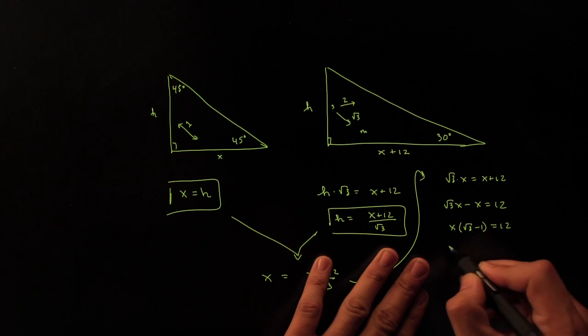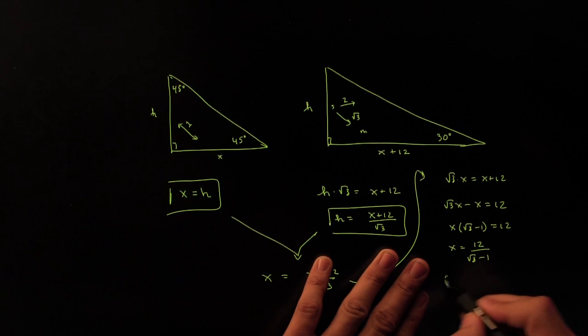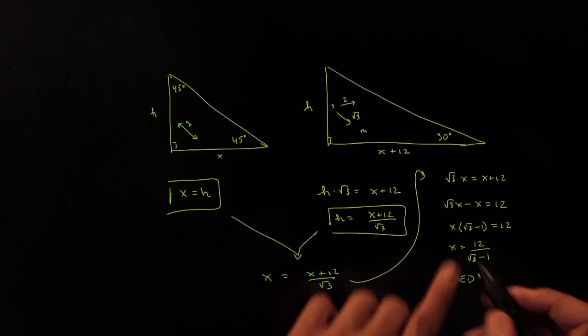And finally, I just divide by the coefficient, so X must be equal to 12 over the square root of 3 minus 1. QED. That, my friends, is X.